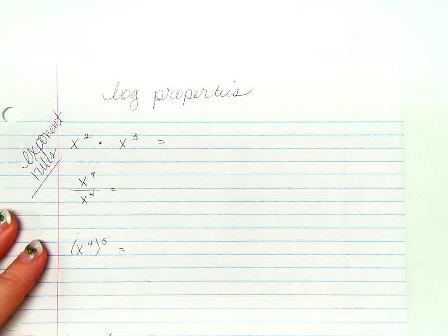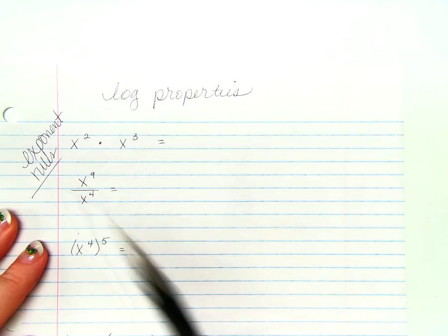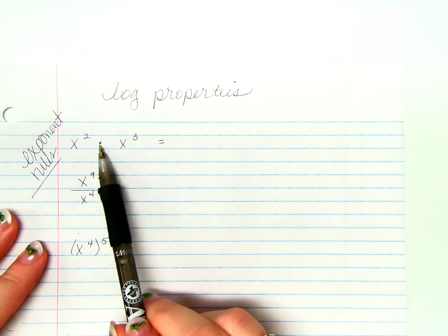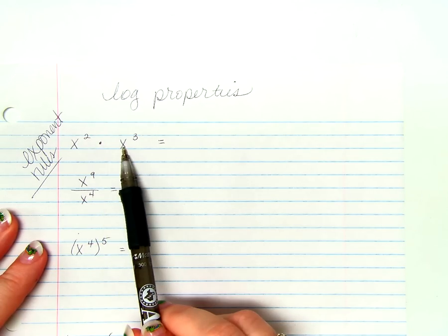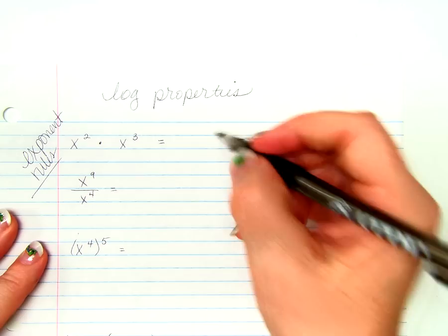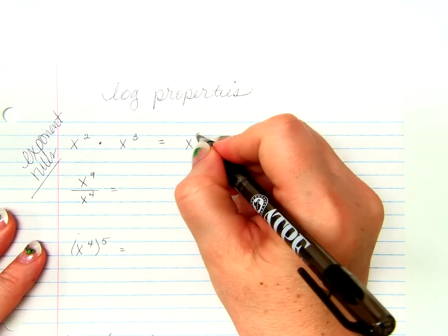Think with me for just a moment back to some exponent rules that we talked about last unit. If we are multiplying like bases, what do we do with our exponents? Yes, we add them.